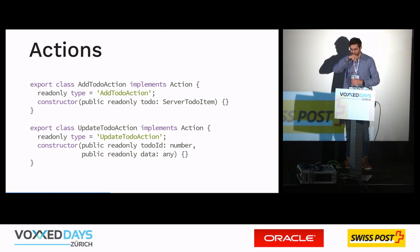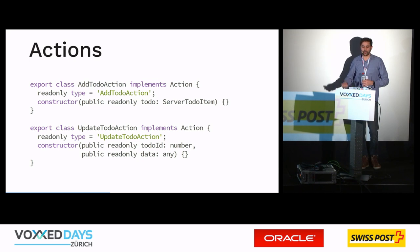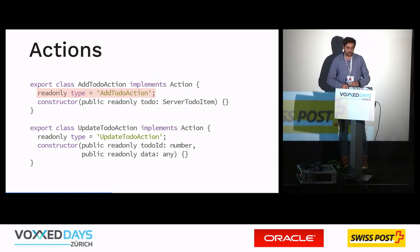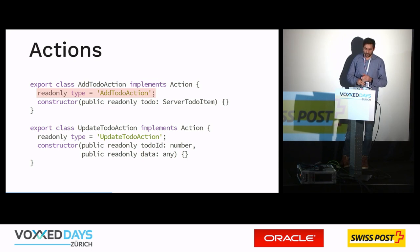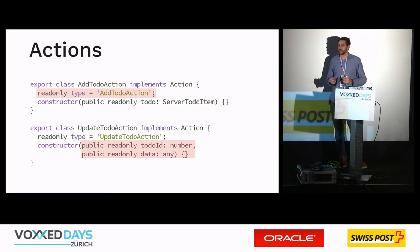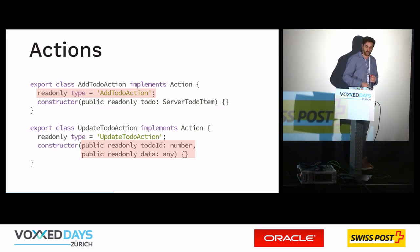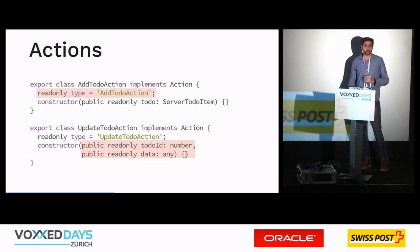Actions in NGRx Store are pretty simple. The only contract from the action interface is that you implement a type field, which is a string, and it helps you distinguish between different actions. In the reducer you check this type property to see what should be performed. Every action can also have a payload — though not necessarily. Some actions don't need one, for example clearing all to-dos in a list. But other actions like updating a to-do might need payload like the to-do ID and the update data.